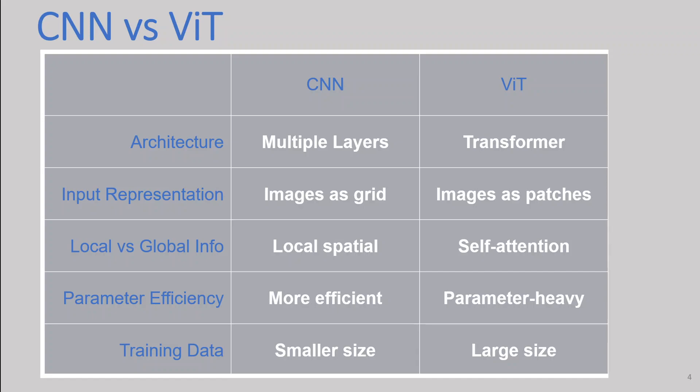As you can see on your screen, I have this table which illustrates the difference between both CNN and ViT. The first difference point is architecture. CNNs are composed of multiple layers, typically including convolutional layers, pooling layers, and fully connected layers. They leverage local receptive fields and weight sharing to capture spatial hierarchies in images.